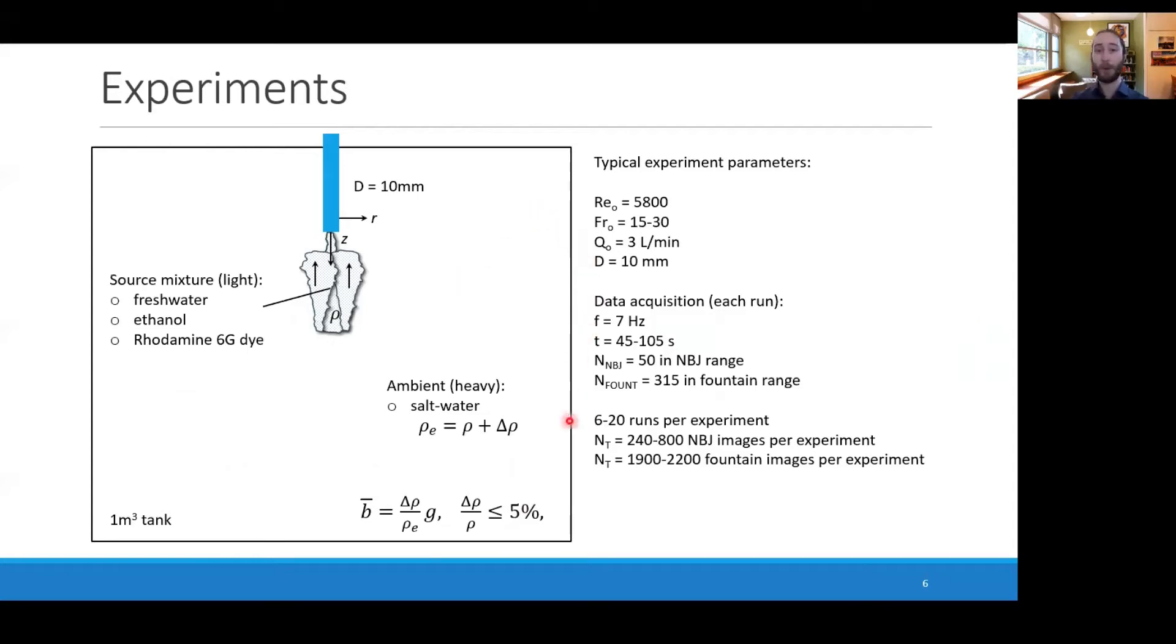Here are some typical experimental parameters: Reynolds number of 5,800, Froude numbers of 15 and 30, and we optimize our experiments for either the negatively buoyant jet stage or the final fully developed fountain stage. This allows us to get a sufficient number of images for each experiment.